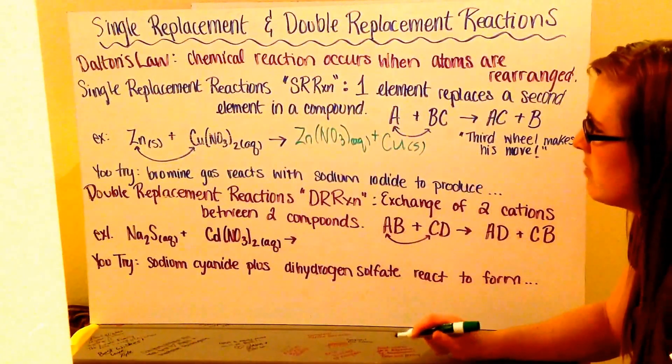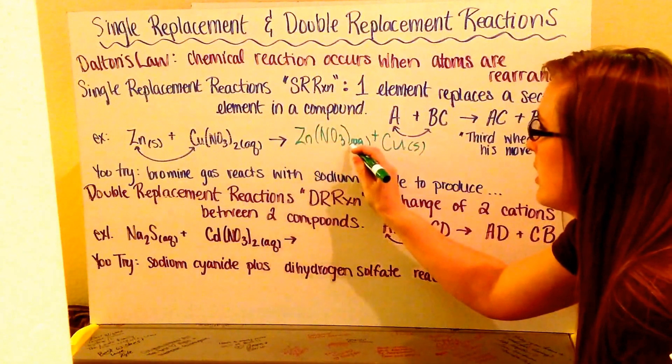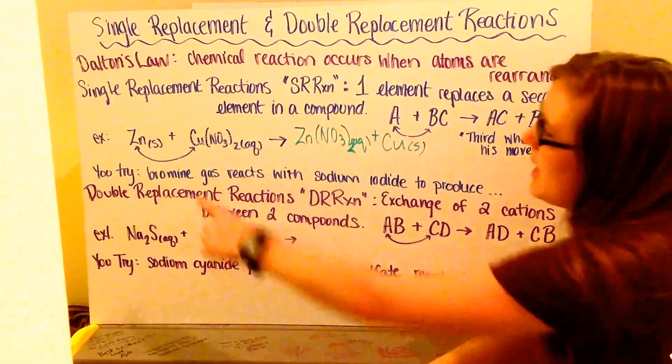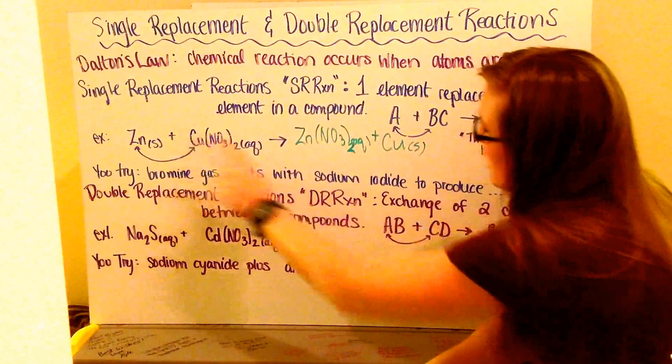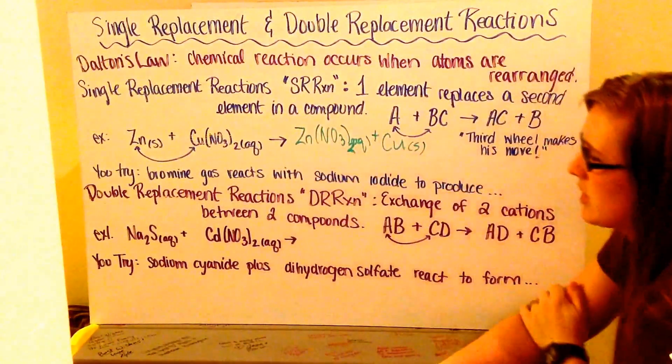Then, I go ahead and balance my reaction. Zinc was plus 2, therefore nitrate has a 2 here. I have 1 zinc, 1 zinc, 1 copper, 1 copper, 2 nitrates, 2 nitrates, so my reaction is balanced.